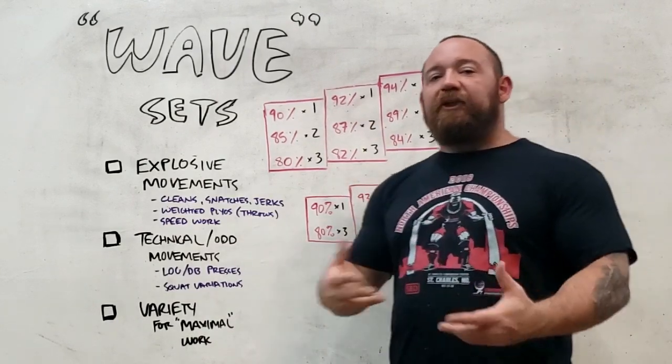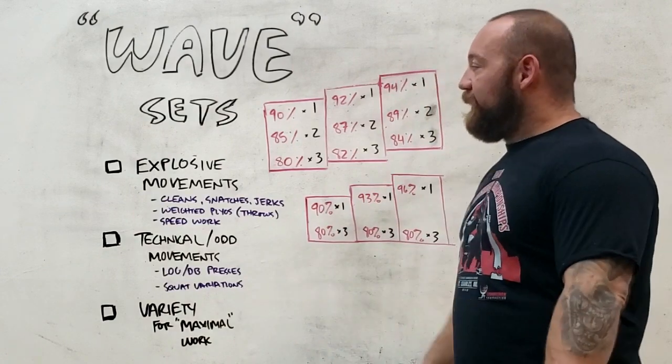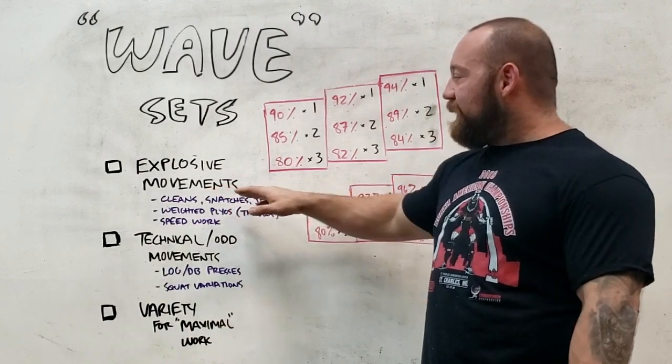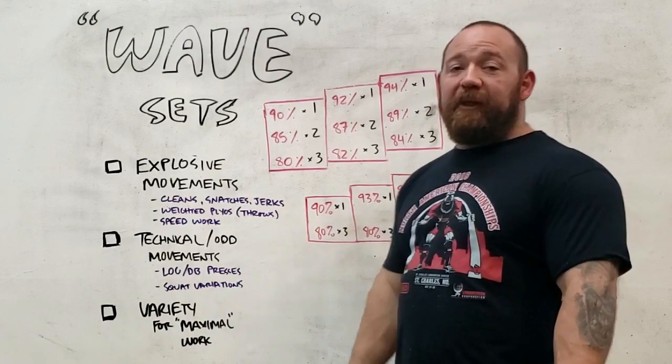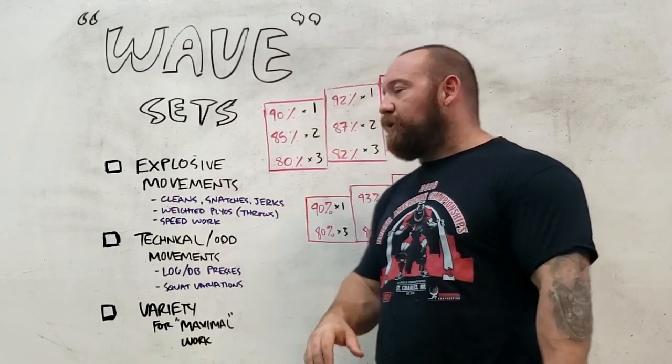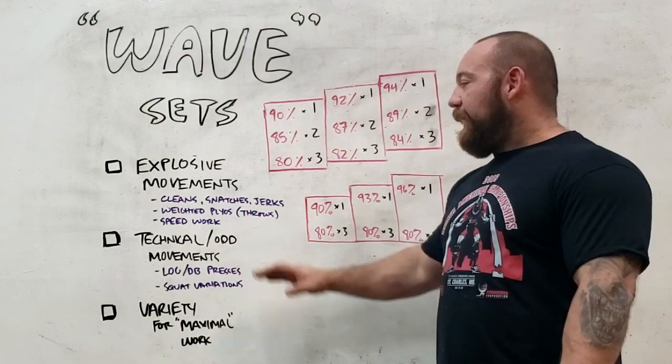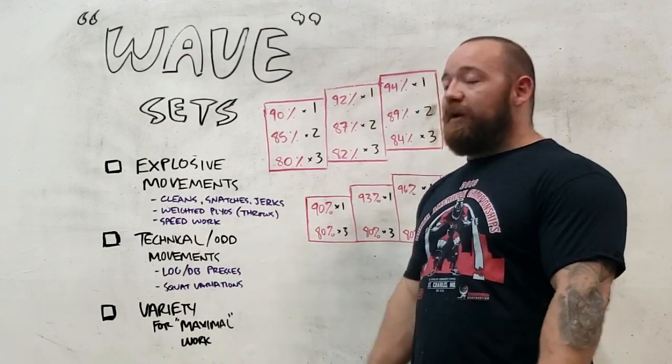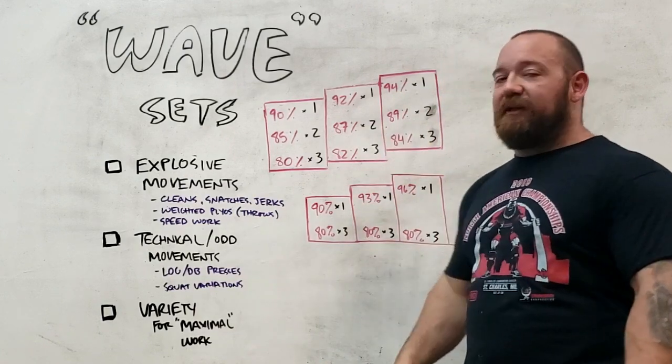So there's three general scenarios where this would be recommended. One is with explosive movements: Olympic lifts, cleans, snatches, and jerks, weighted plyometric movements where you can actually control the weight that you're using to a degree to actually mirror something like this, and speed work deadlift, squat, and bench press.